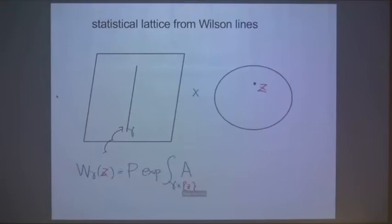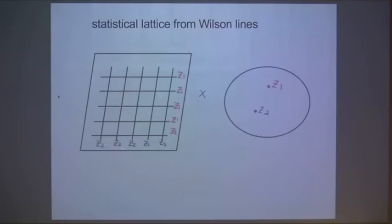Now we can come back to the statistical mechanical models. We prepare a Wilson line — a layer of Wilson line integral of the gauge field connection of the four-dimensional theory. Then I can make a statistical lattice by putting in many parallel Wilson lines. Here I have chosen the situation where the spectral parameters associated with horizontal and vertical directions are the same respectively, denoted z1 and z2.